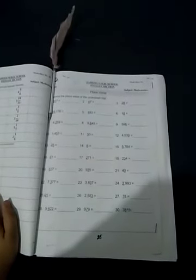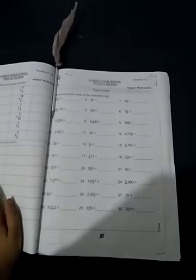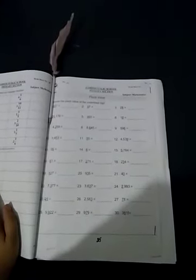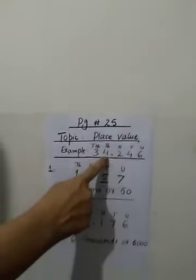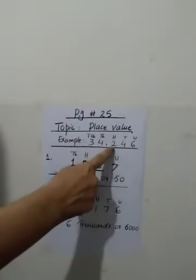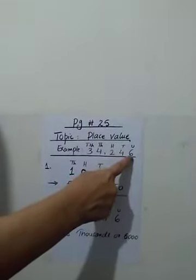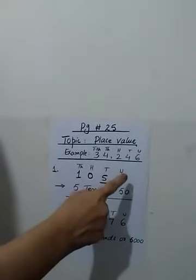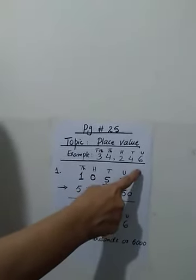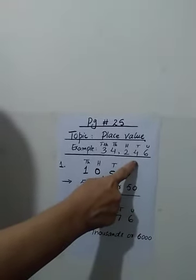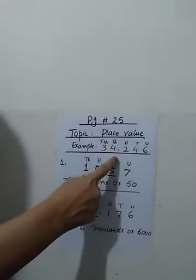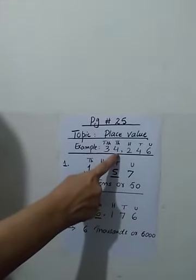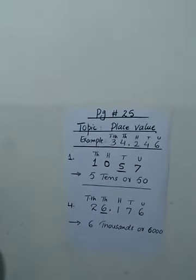Place value means the position of the number according to its place. For example, the number is 3, 4, 2, 4, 6. The place value of 6 is unit, 4 is 10, 2 is 100, 4 is 1000, and 3 is 10,000.